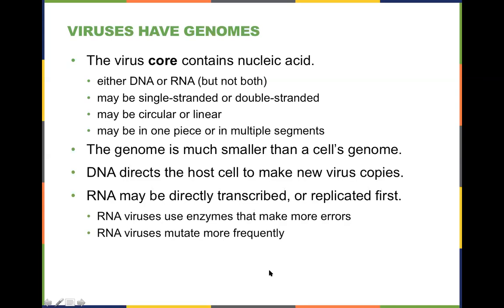Anytime a cell becomes infected, it sends a signal out to adjacent cells using interferons to say: I'm infected, I think it's a viral infection, protect yourselves. Shut down your normal G1, S, G2 processes. If they don't, they become infected. This is mother nature's way of corralling the viral infection.